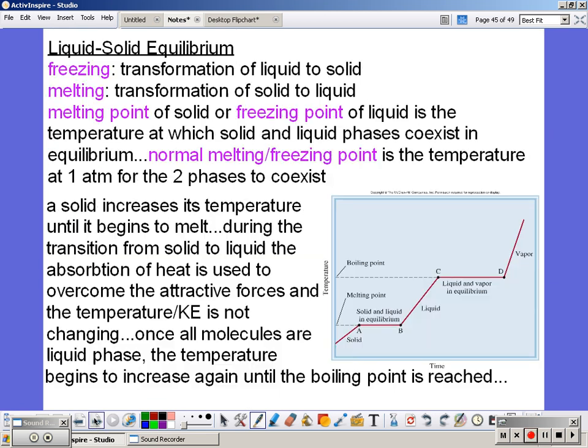Freezing is a transformation from liquid to solid, melting solid to liquid. Melting point of the solid, or the freezing point of the liquid, is the temperature at which the solid and liquid phase coexist in equilibrium. Normal melting and freezing point is the temperature at 1 atm. So a solid increases its temperature until it begins to melt. During the transformation from solid to liquid, the absorption of heat is used to overcome the attractive forces. The temperature, the kinetic energy, is not changing.